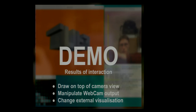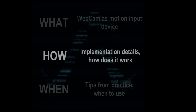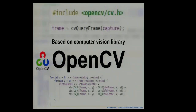To sum up the first part: webcam-based games are those that use motion rather than traditional input devices. The next part is for developers. This kind of game would not be possible without the open source computer vision library called OpenCV, which provides two main things.